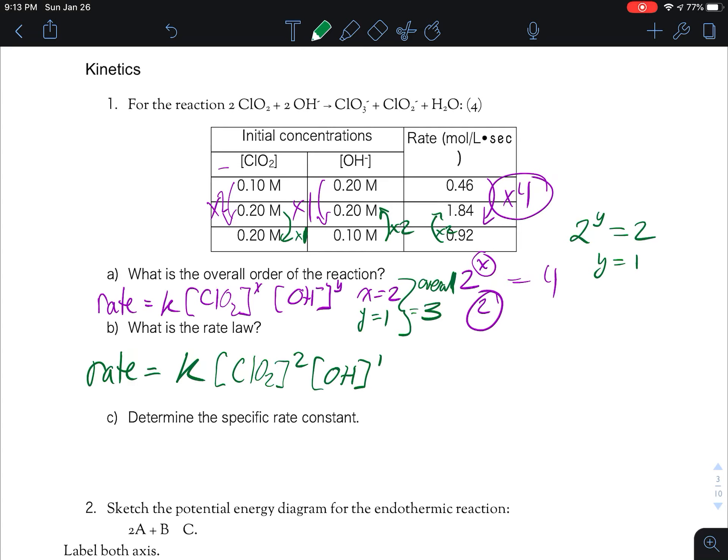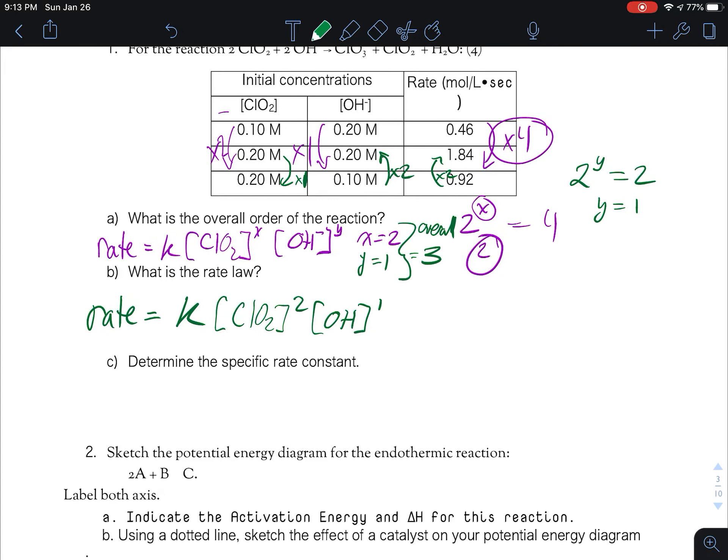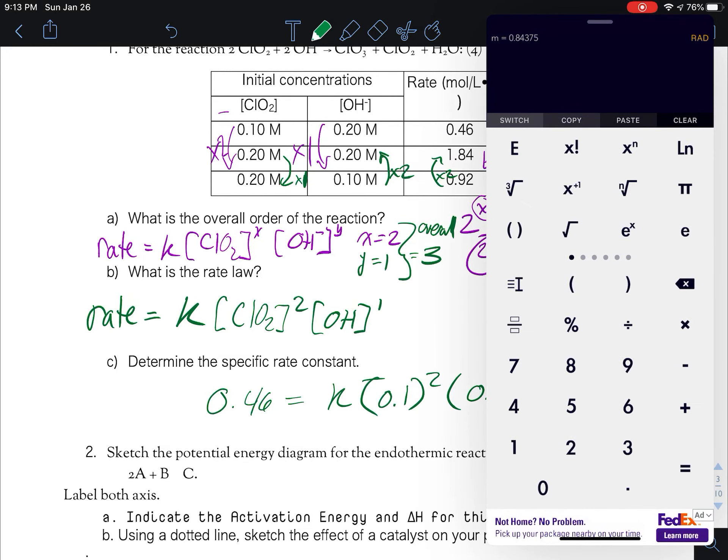All right, determine the specific rate constant. This is just a plug and play, pick any row and plug it in. I try to pick the ones with the lowest numbers just for fun. So I'm going to pick my rate, my rate is 0.46 equals k times 0.1 to the power of two times 0.2 to the power of one. So do some multiplication there. I've got a square and I've got some other stuff. Let's just get my calculator out.